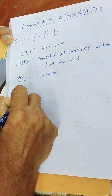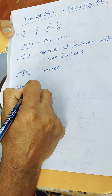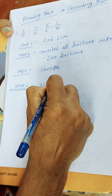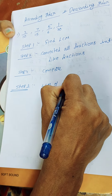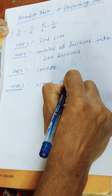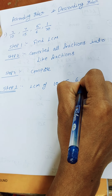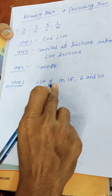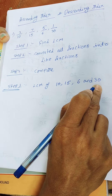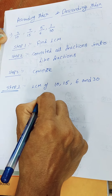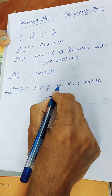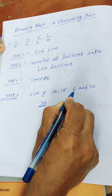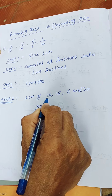So first we find LCM in step 1. The denominators are 10, 15, 6, and 30. We first look at the greater number here. 30 is the greater number. We check: is 30 divisible by all the remaining denominators?